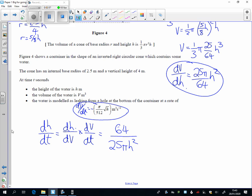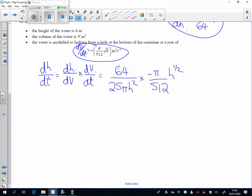And dV/dt, this one, times by minus pi over 512, and then I've got a root h there. I'm going to put that as h to the power of a half. Well, the pi's cancel and the 64 goes into 512 eight times.